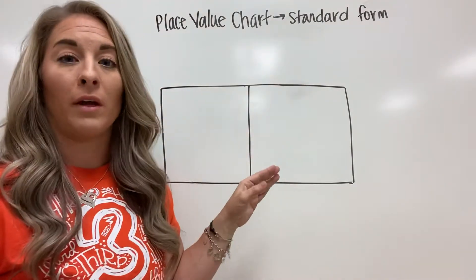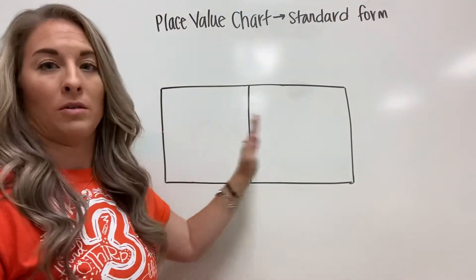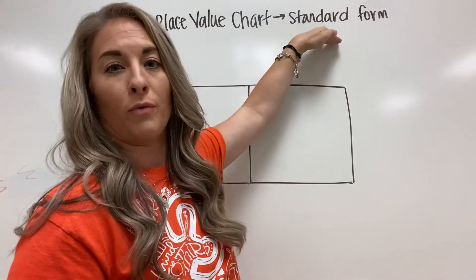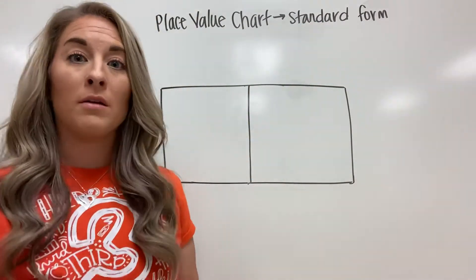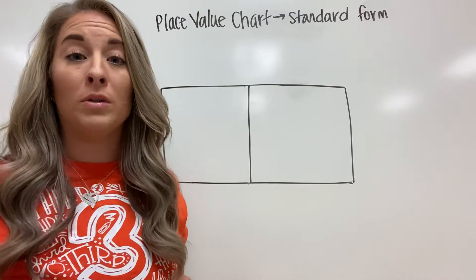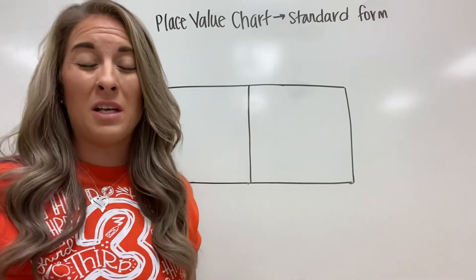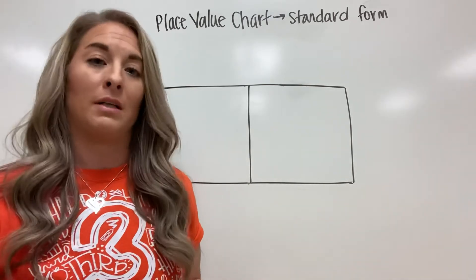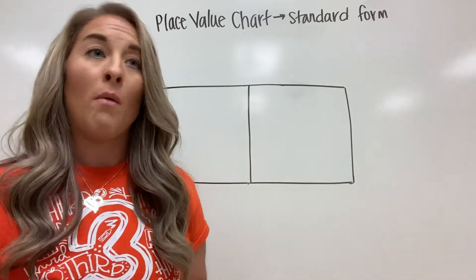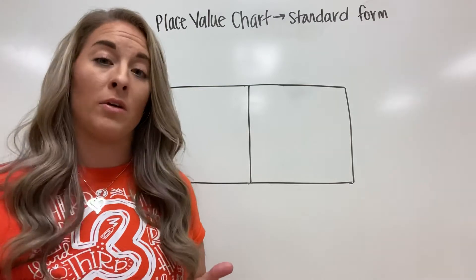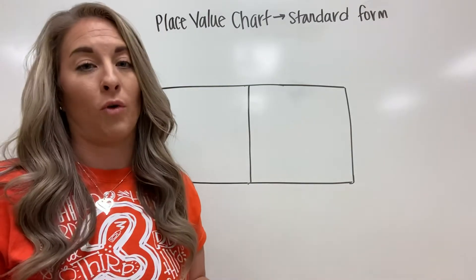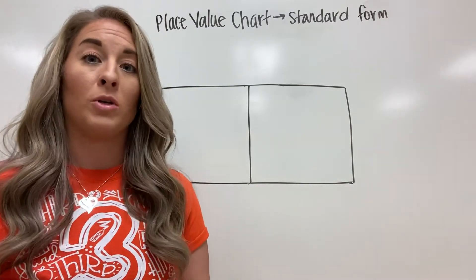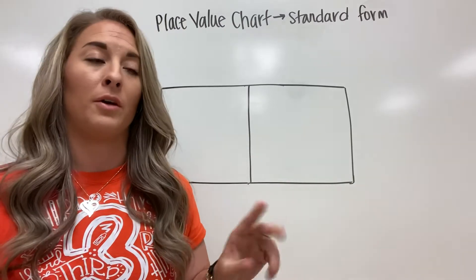As you're filling in your place value chart, just know that when you write the digits in the right place you're using what's called standard form. Standard form is when you take a number and you write it completely normal. Like if I wanted to say I had 17 cookies, I don't walk around and say I have 10 plus 7 cookies - we don't talk like that, that's not standard, it's not normal. We'd walk around and say I have 17 cookies, so 17 is standard form. There are many forms of a number which is going to come in a couple videos later, but not today's.